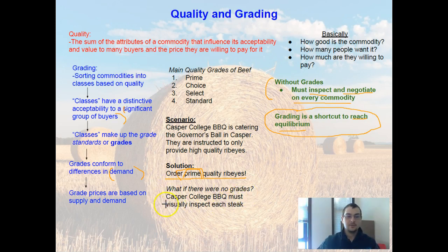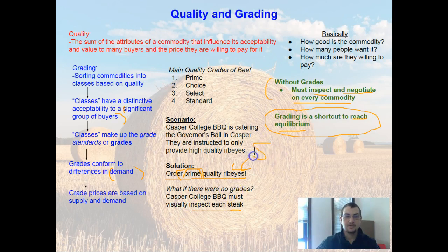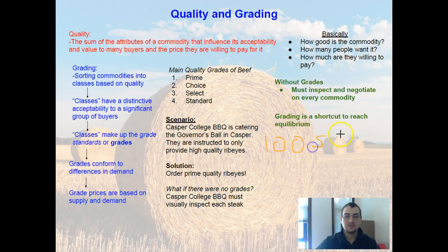Without grades, Casper College BBQ must visually inspect each and every single steak and negotiate on every price. That would highly increase the cost. Right now, you can simply put in an order for a box of prime quality ribeyes. Without grades, if you needed 100 steaks, you'd have to visually inspect all 100, taking a significant amount of time and therefore increasing the cost. Grading allows us to quickly order that whole box and reach equilibrium much faster.